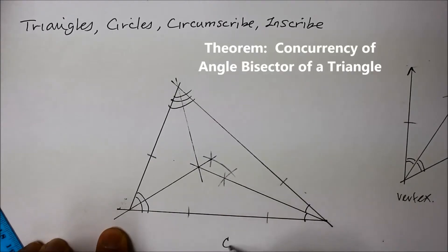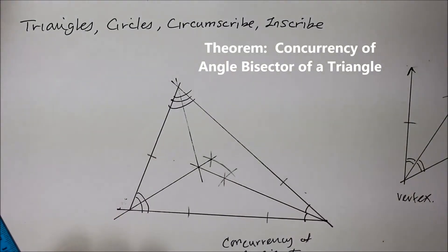And that point is called congruency or concurrency of angle bisector of a triangle. This is actually a theorem called concurrency of angle bisector of a triangle.